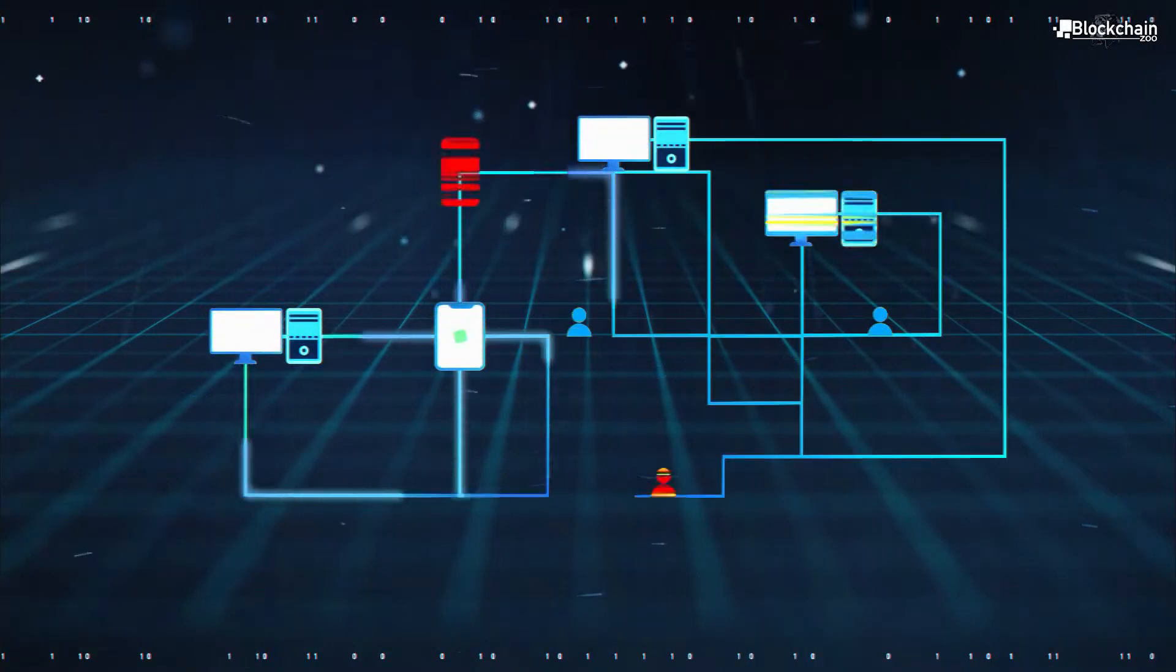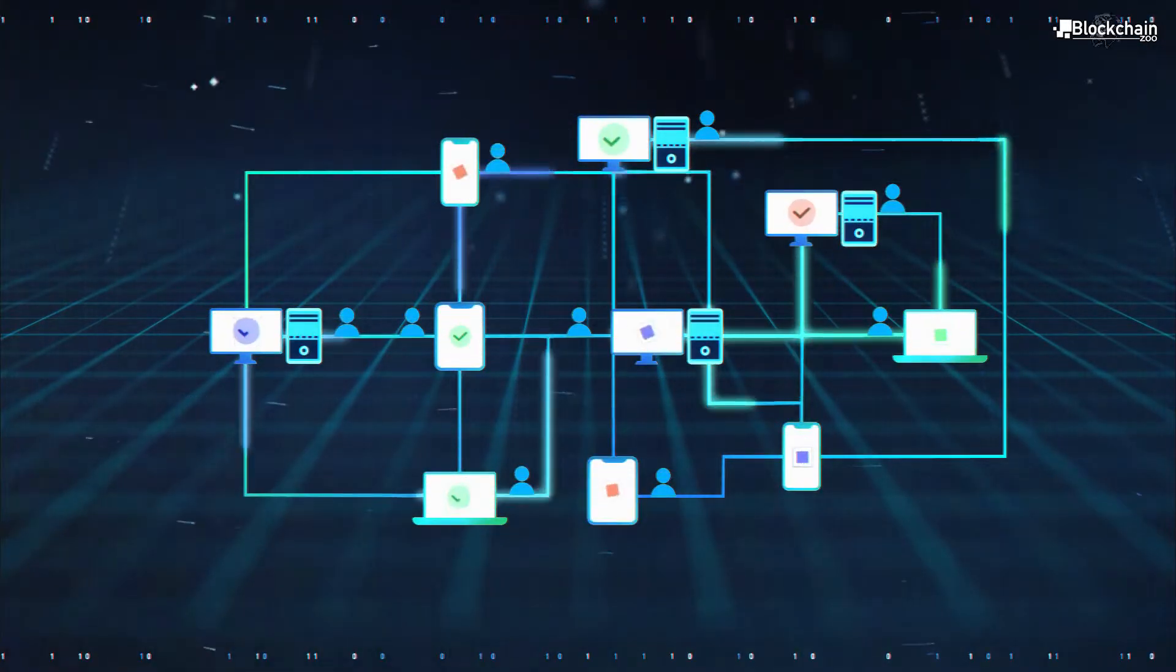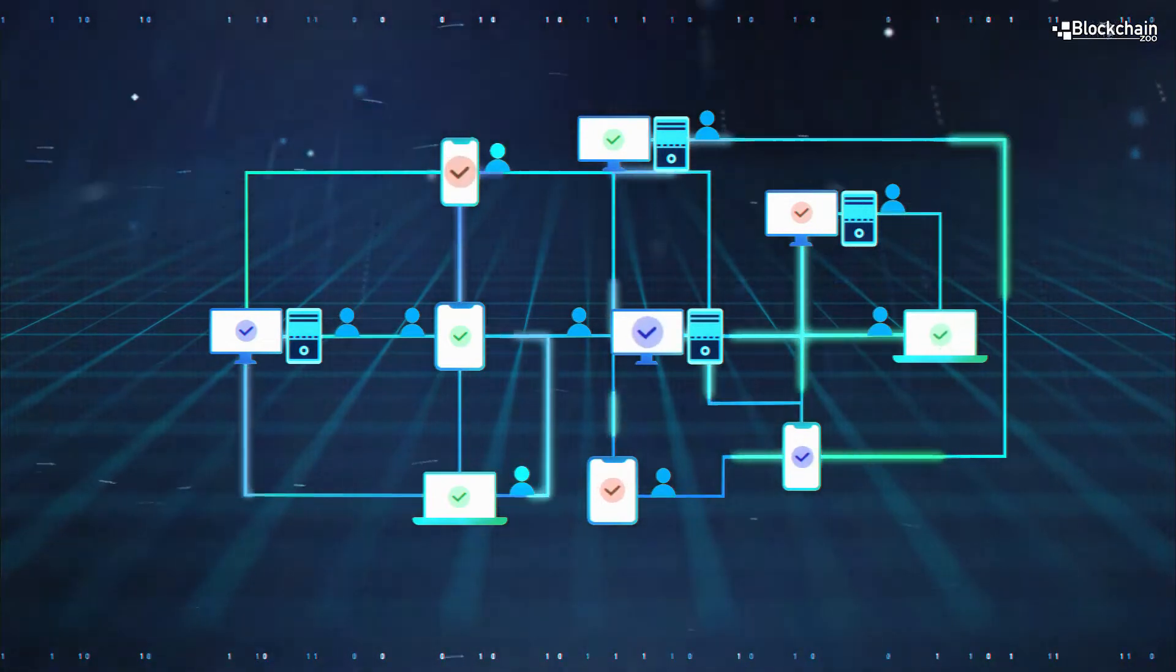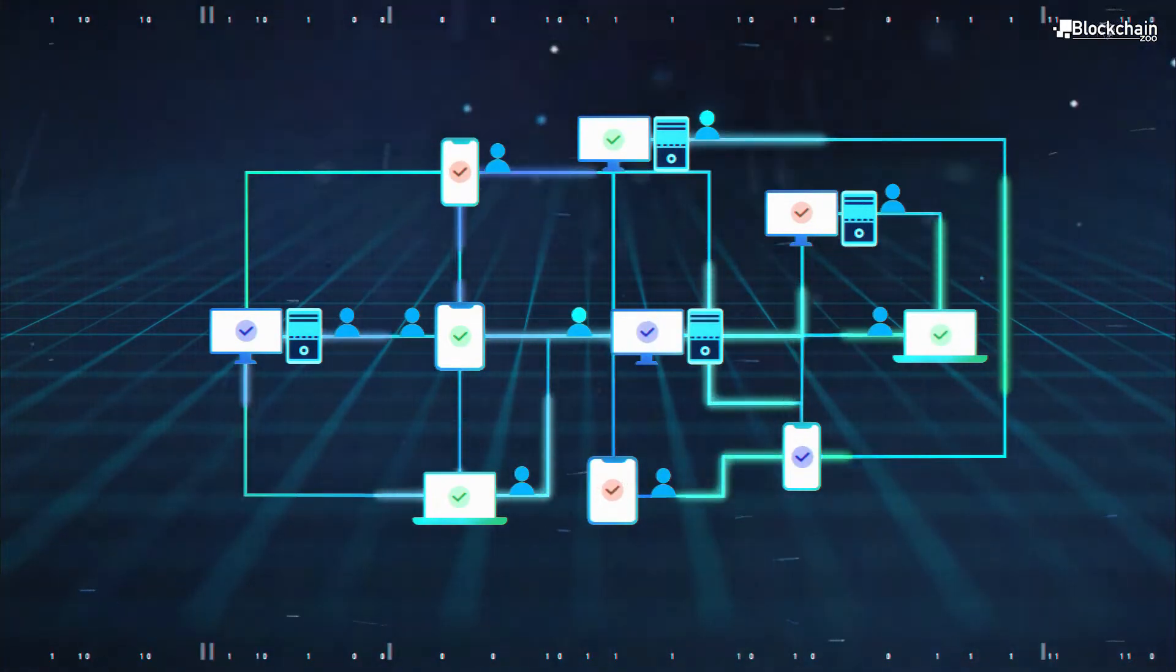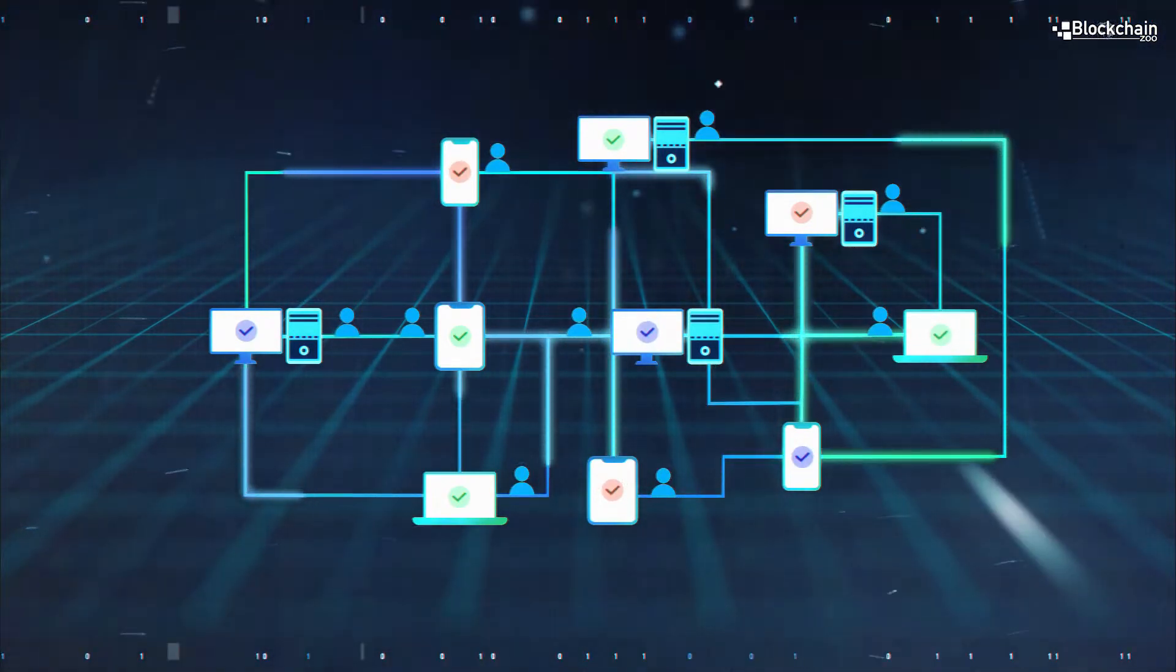A consensus algorithm is a strategy that a group of computers use to agree between each other on what's true. There's different kinds, different flavors of consensus algorithms that people have applied that each have different properties or trade-offs in terms of how secure the agreement is and who gets to vote on what.